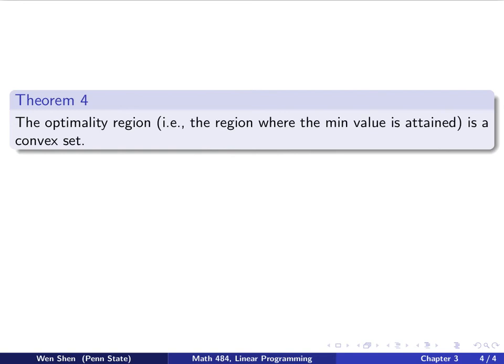Let's look at something a bit broader, the optimality region. This is theorem 4. So the optimality region, what is it? Well, it is the region where the minimum value is attained. It might be one point, it might be a set. One point is a set. So this region is a convex set. Let's see how we can prove this.